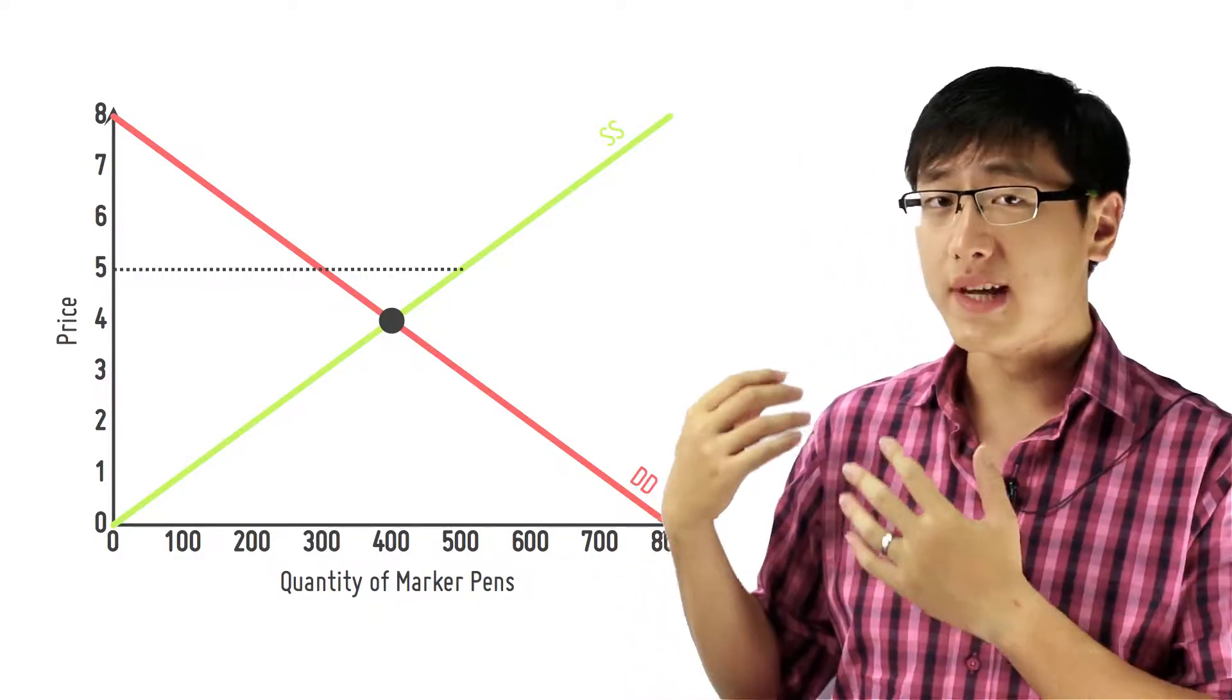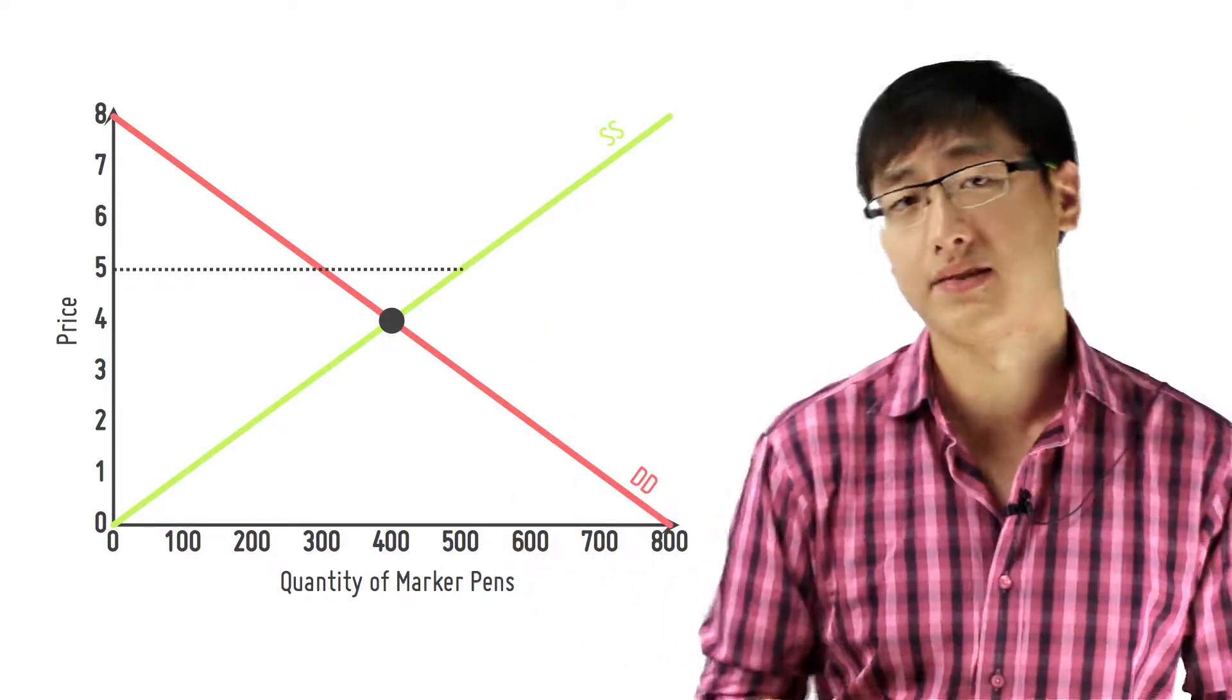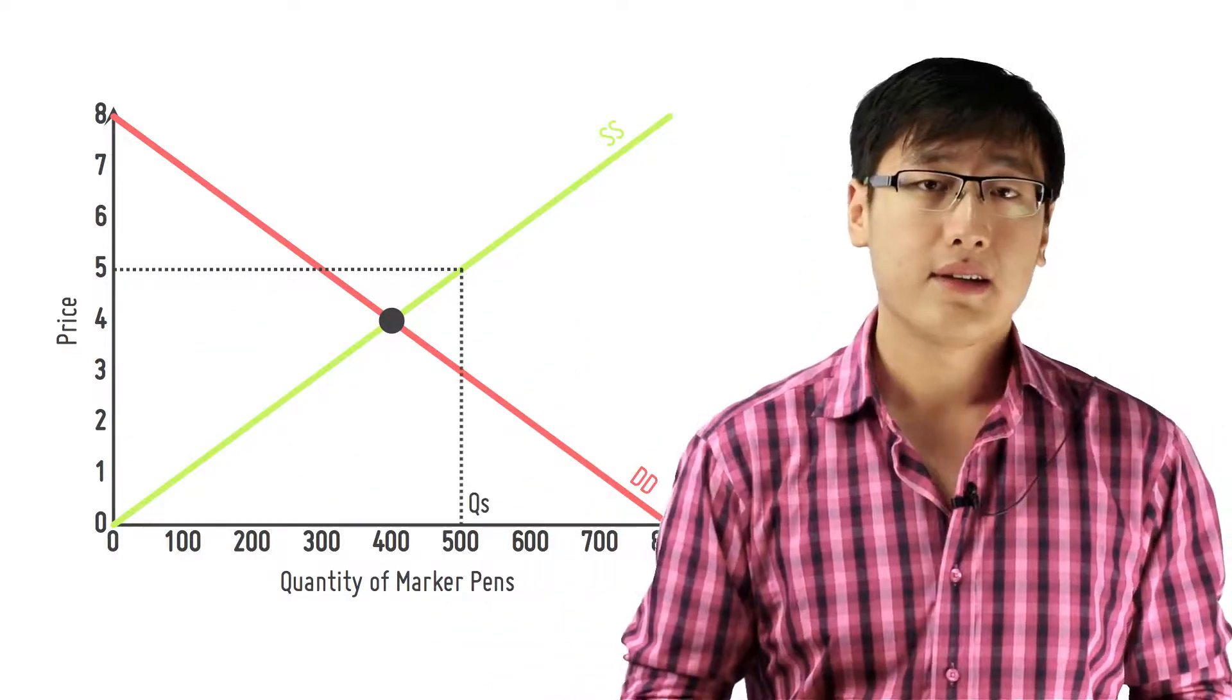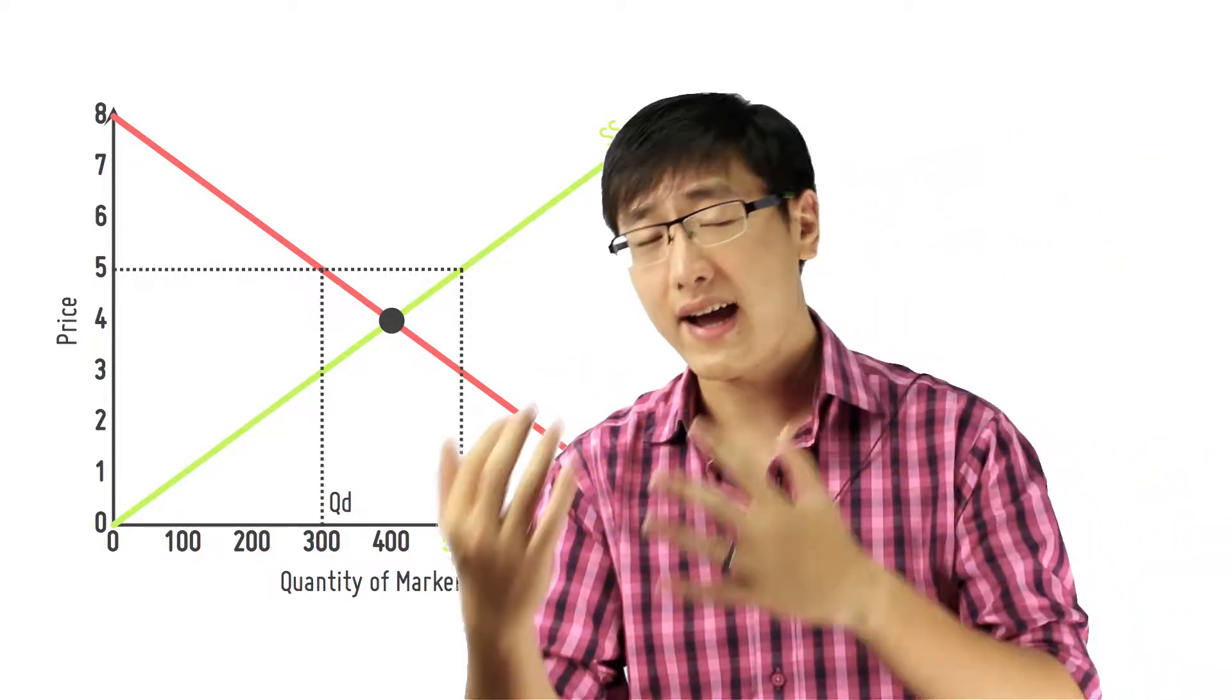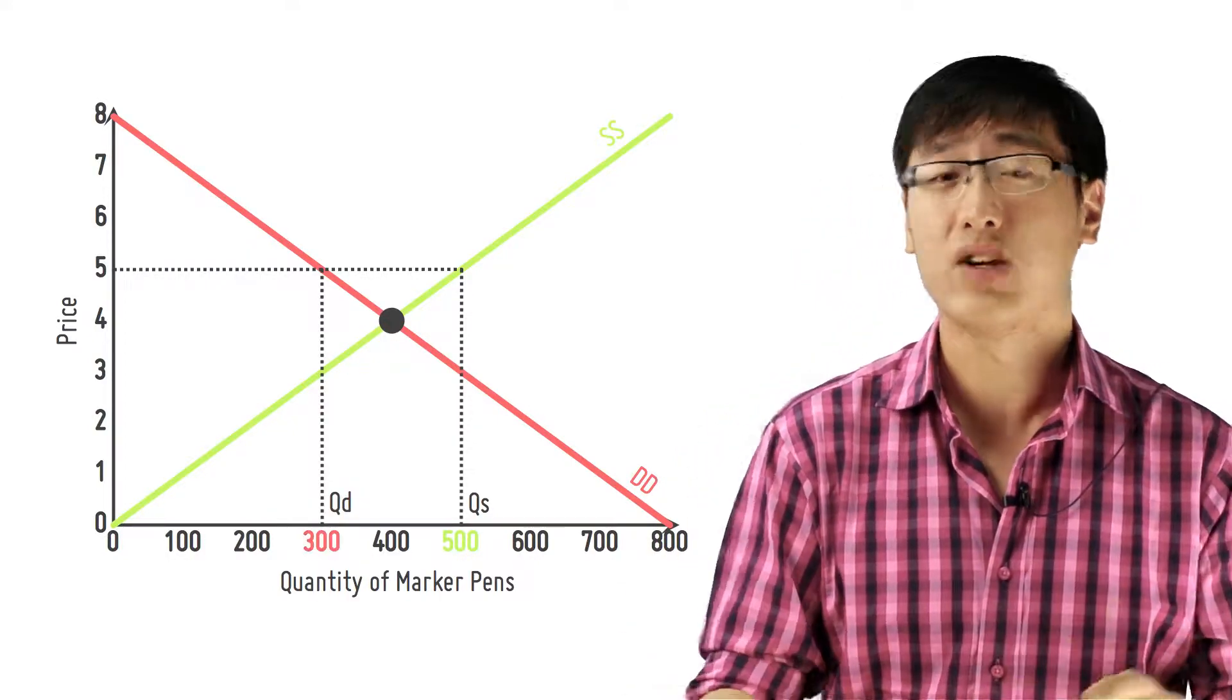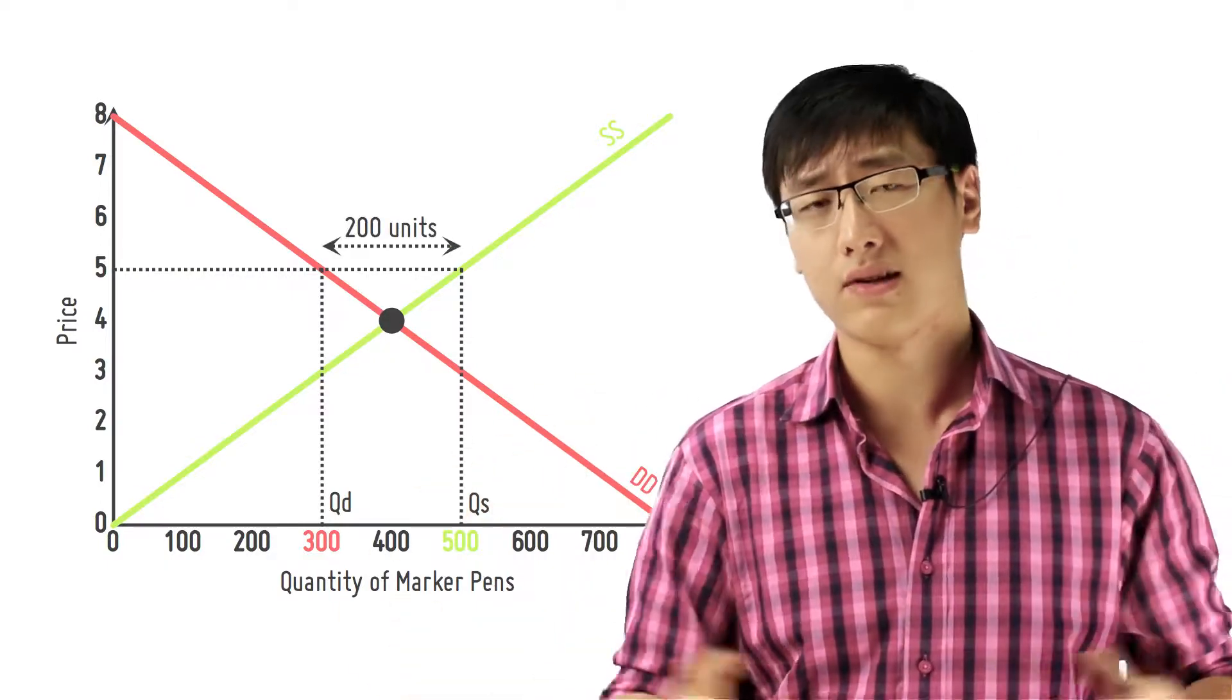Now if we were to choose a price that is not the equilibrium price, for example, a price higher than the equilibrium price, then what happens? Well, you see from the graph that the quantity supplied is higher than the quantity demanded. That means, for example, your suppliers are willing to supply 500 units of a good while your consumers are only willing and able to buy 300 units at that price. So what happens is that only 300 units get sold and there's a surplus of 200 units.